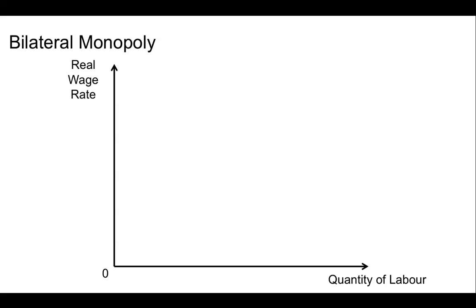In this video we're going to be looking at how to model the bilateral monopoly situation. We begin by putting down the normal axes that we would use for labor market wage determination. We have the real wage rate on the y-axis and the quantity of labor on the x-axis.